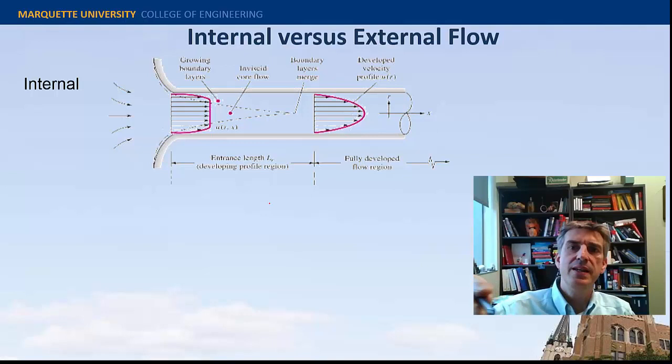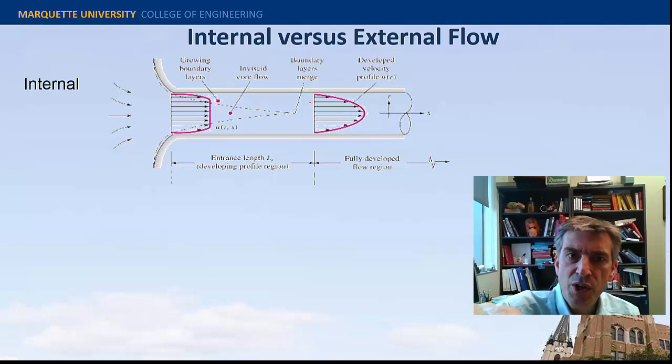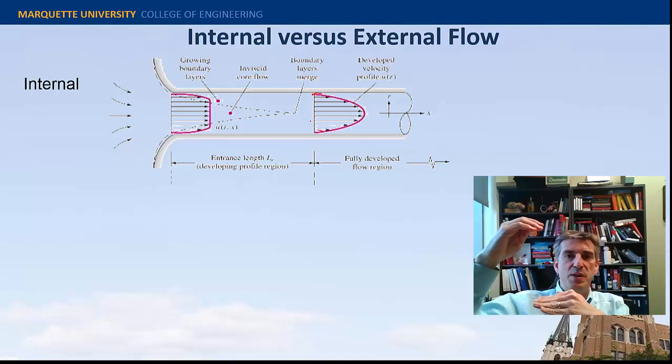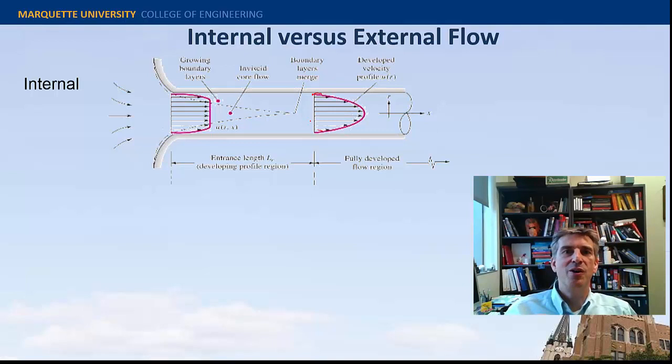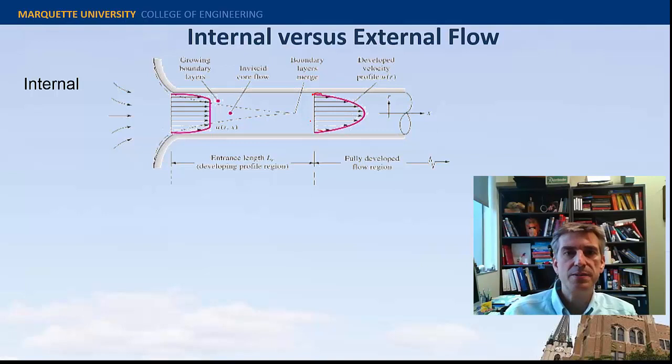These concepts are also true for internal flow, like flow in a pipe, where a boundary layer develops — shown by the dotted line. Eventually within an internal flow, the boundary layers from the top and bottom begin to communicate. You get a fully developed profile that no longer changes with position down the pipe. In turbulent flow, that means the average profile doesn't change; in laminar flow it's the actual profile shape itself.